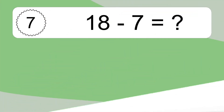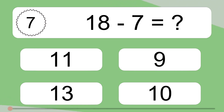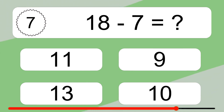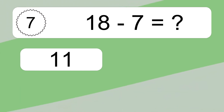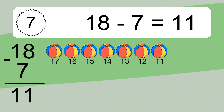18 minus 7 equals what? 18 minus 7 equals 11. Let's count it.